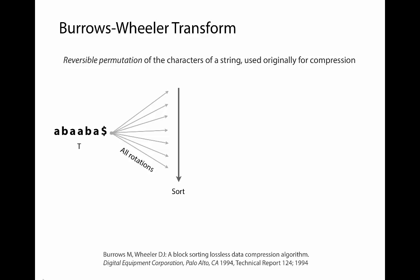By rotations, I mean all the different ways that we can make a new string by taking a character off of one end of T and sticking it on the other. For example, we can make a rotation of T by taking the first character off the beginning and sticking it on the end, giving us the string B, A, A, B, A dollar sign, A. That's an example of a rotation of T. We'll take all the distinct rotations of T and then sort them lexicographically.